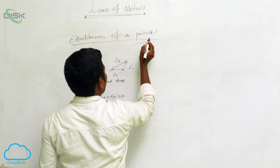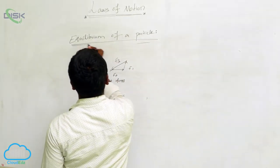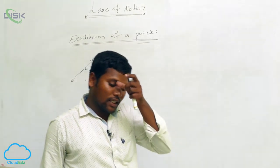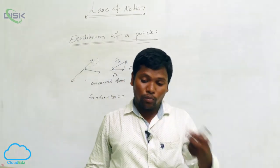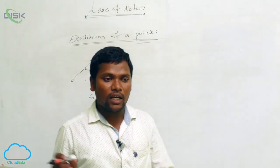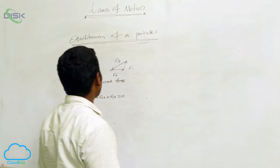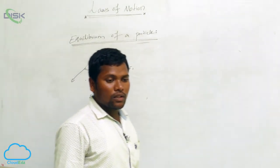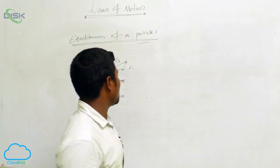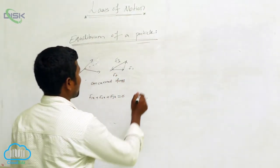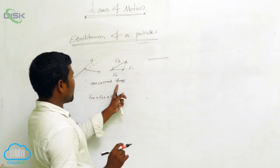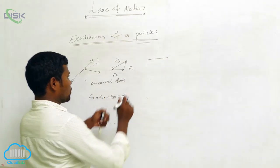Equilibrium of a particle. We can say equilibrium means both sides should be the same — then we can say that is the equilibrium position. According to Newton's third law, action and there is an equal and opposite reaction. Let us take a diagram, so the concurrent forces are there.